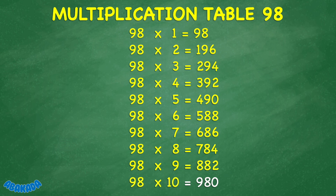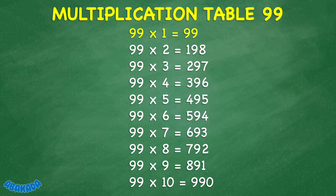98 times 10 equals 980. 99 times 1 equals 99. 99 times 2 equals 198. 99 times 3 equals 297. 99 times 4 equals 396. 99 times 5 equals 495. 99 times 6 equals 594. 99 times 7 equals 693. 99 times 8 equals 792. 99 times 9 equals 891. 99 times 10 equals 990.